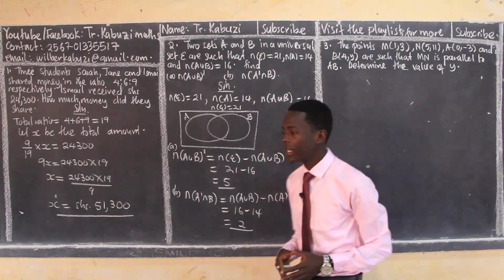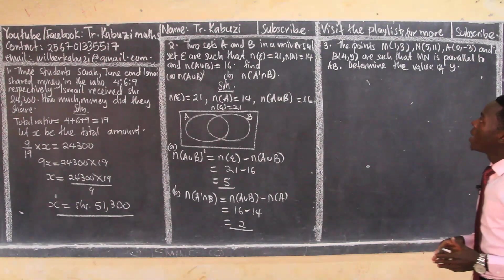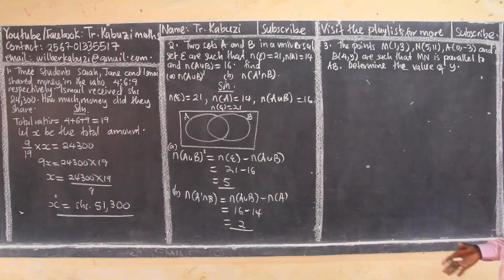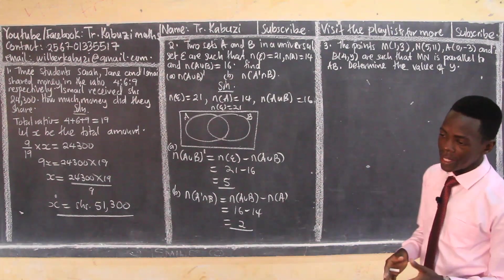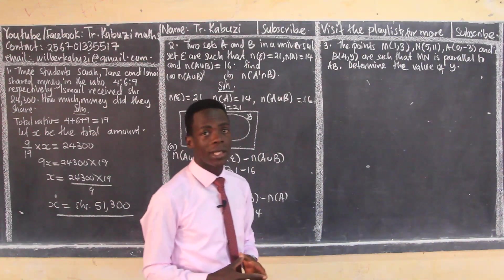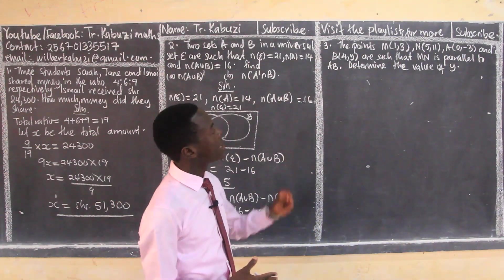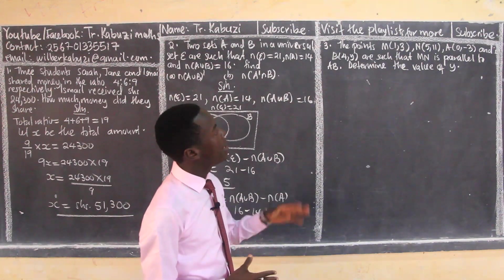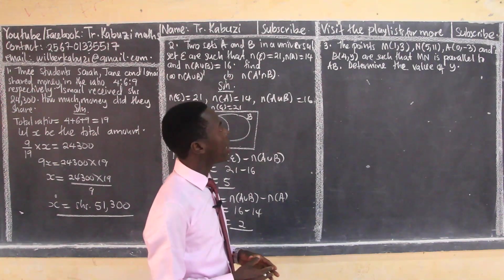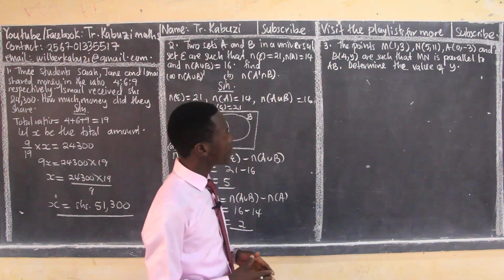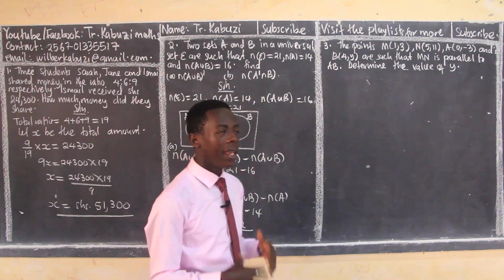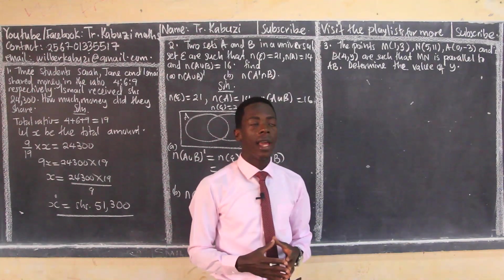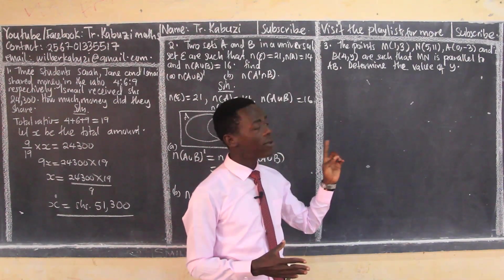We come now to this one. Some people confused it as a vector, some took them as lines. But now to me, I'm going to consider them as lines because they're saying points M, N, A, and B are such that MN is parallel to AB. Find the value of y. If I consider them as lines, if AB is parallel to MN, it means they are having the same gradients.